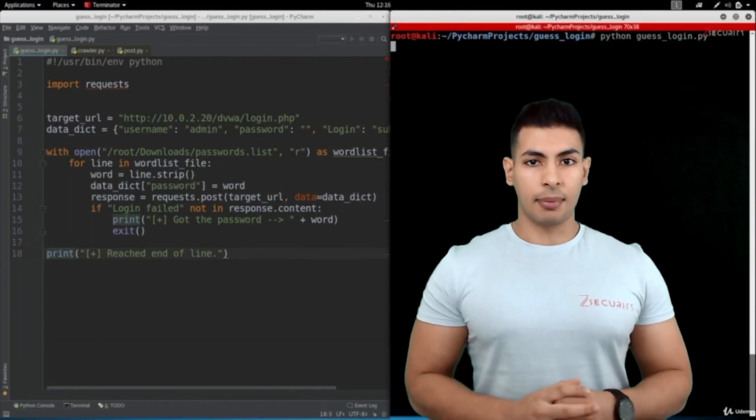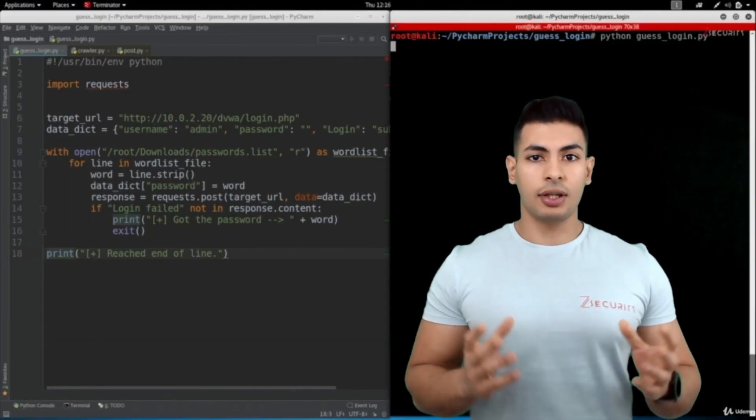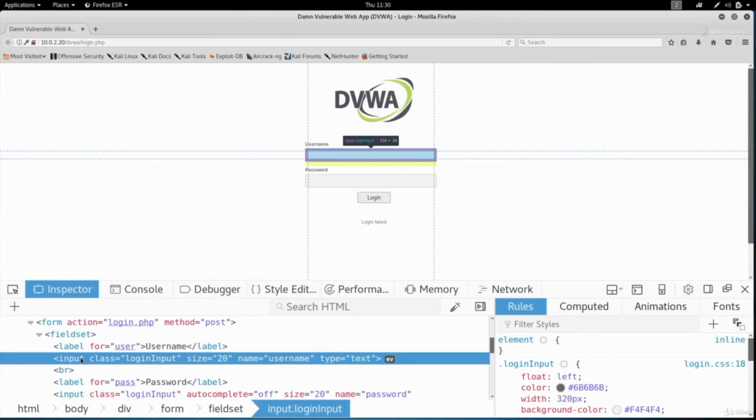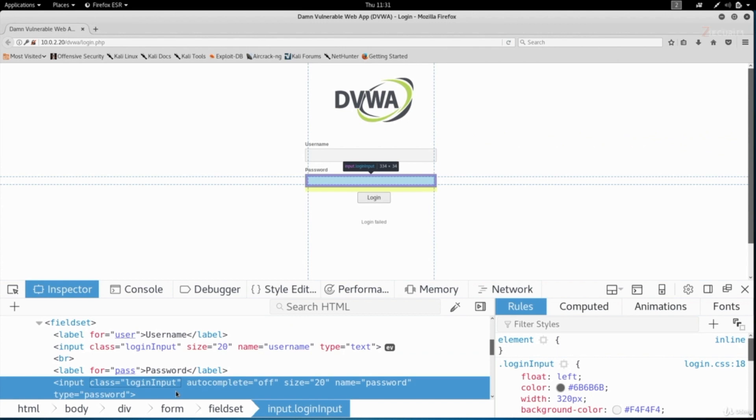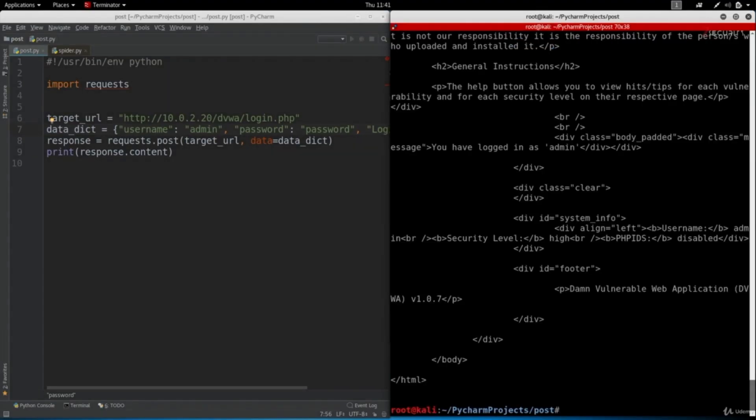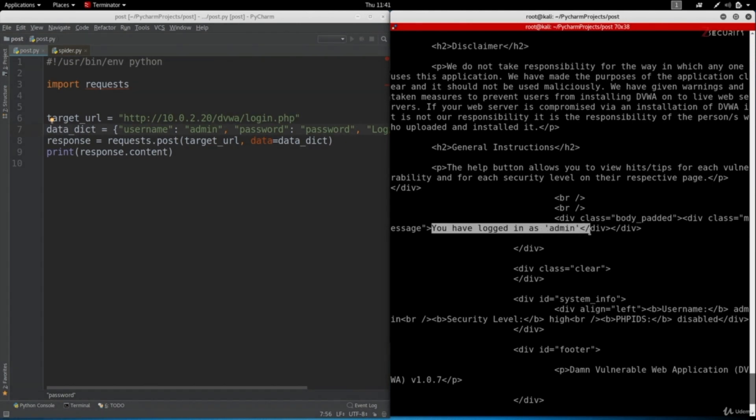Then we're going to write a program that can be used to get the login information of any login page. As we do this, you're going to learn how to read the HTML code of any web page, analyze it, and extract the useful parts from it.